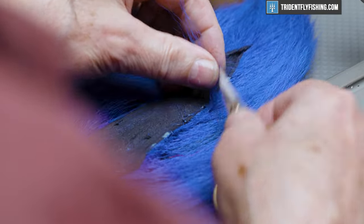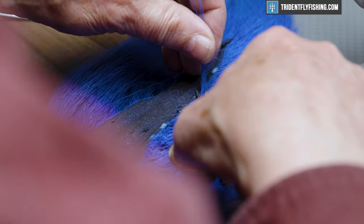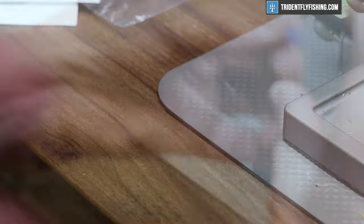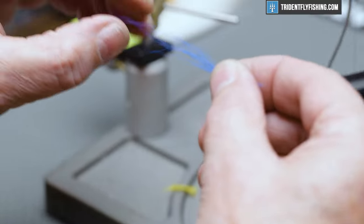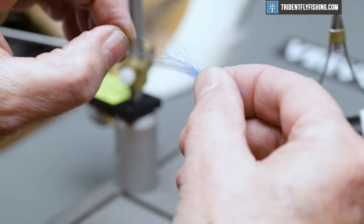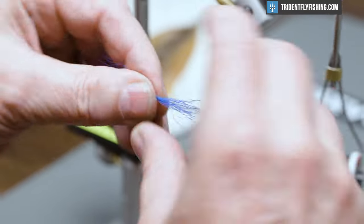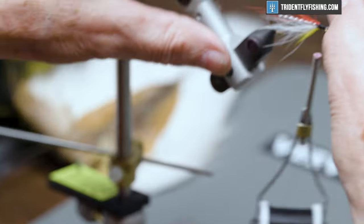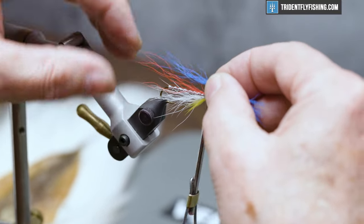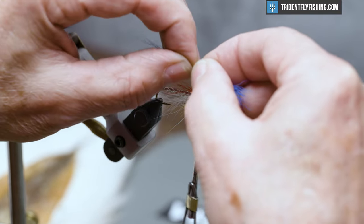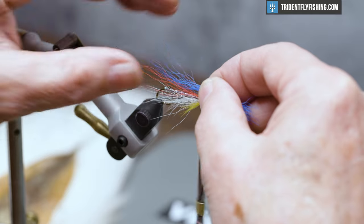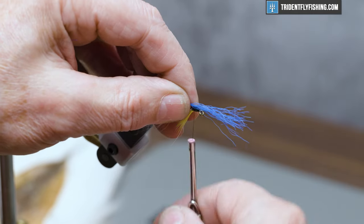And the next color is going to be blue, some blue bucktail. You want to keep these clumps fairly sparse or you'll end up with a big giant head on the fly, which we want to avoid. And these will extend back the same distance as the red.